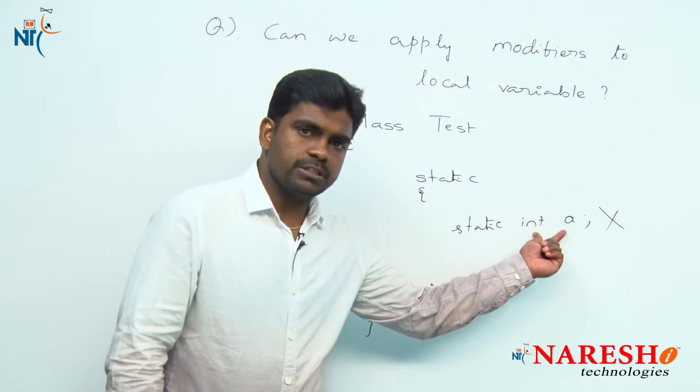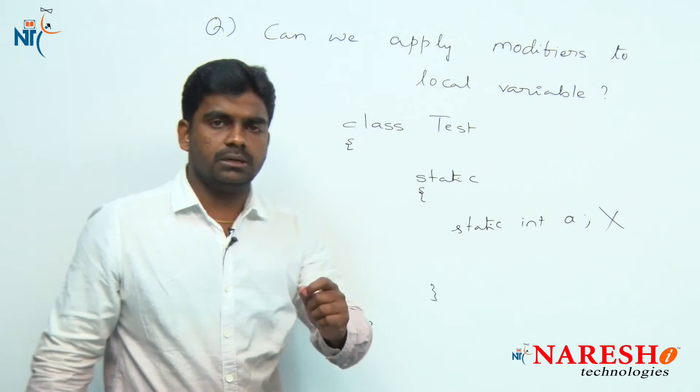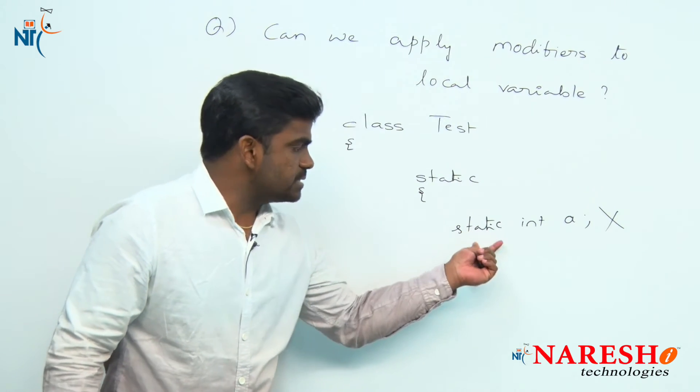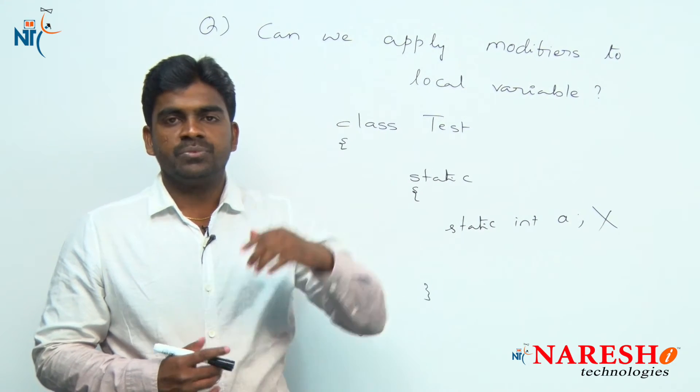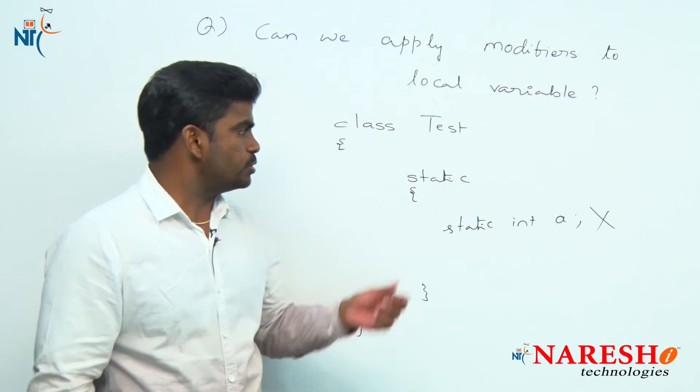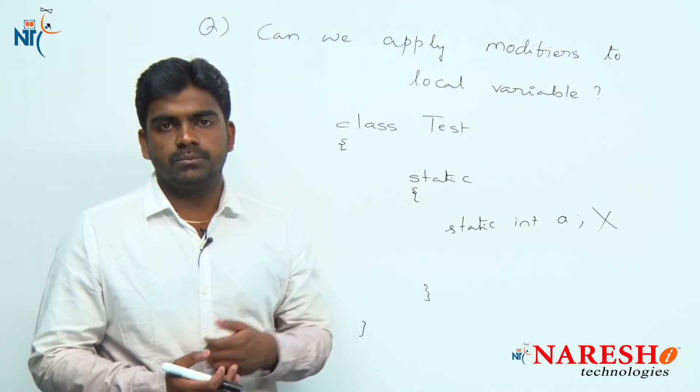See, the reason is: a local variable's scope belongs to a particular block or a particular method. But static means it is common, it is a class level variable. Using the class name, we are accessing static variables.